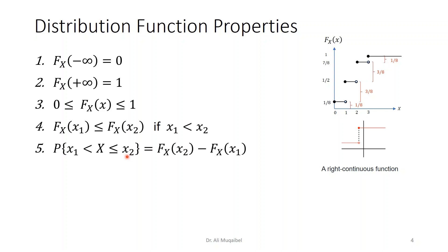If you want to find the probability between two values — be careful about the equal sign — for x greater than x1 and less than or equal to x2, you subtract the CDFs to get the probability. Property six: the CDF is always right-continuous, meaning if you have a discontinuity you pick the higher value, because the definition of the CDF says less than or equal to, so it includes the previous value.